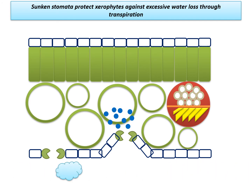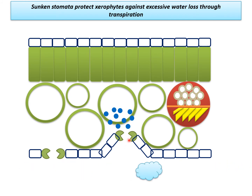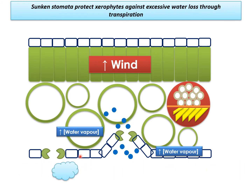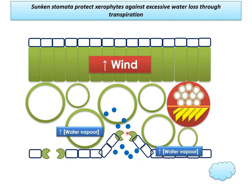Sunken stomata is a very nice adaptation that some xerophytic plants have, where the epidermis bulges inwards creating a small indent where the stomata are located in the sunken area. They protect xerophytic plants against excessive water loss through transpiration because they can trap water vapor inside that sunken cavity, meaning the wind will not blow the water vapor away as frequently. This keeps the diffusion gradient equal more often, making sunken stomata a great adaptation to limit water loss.